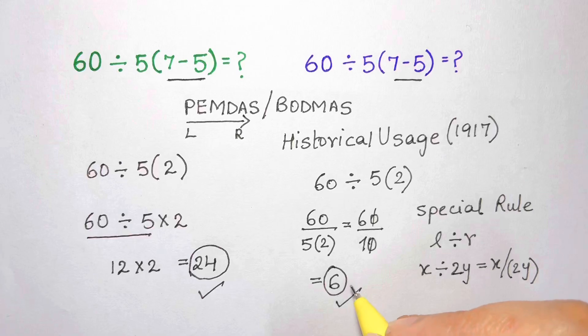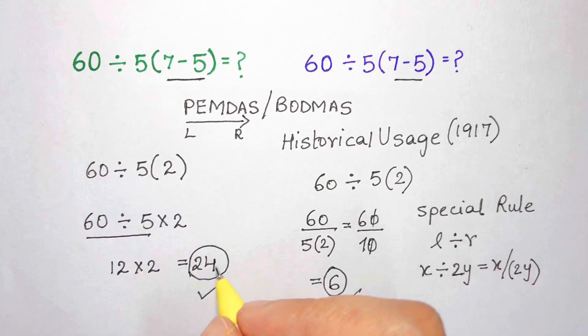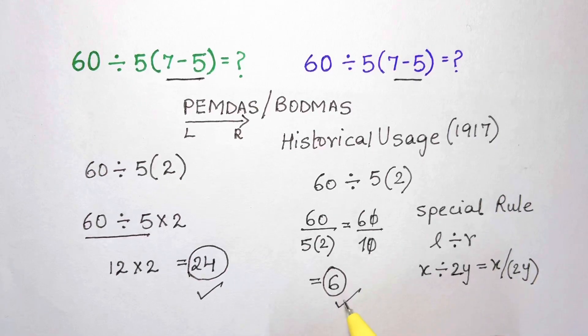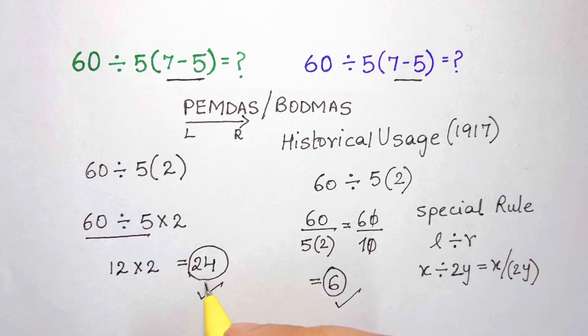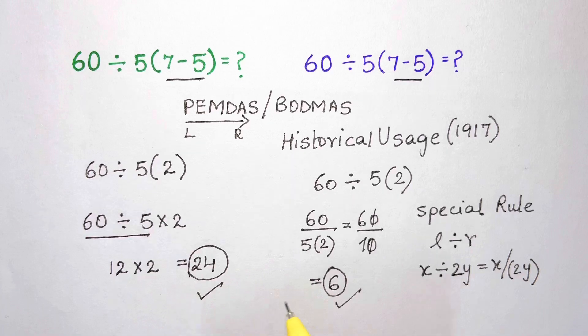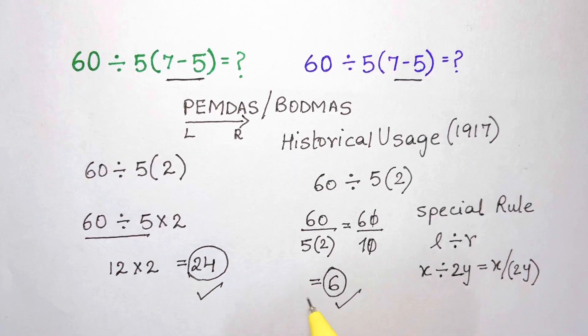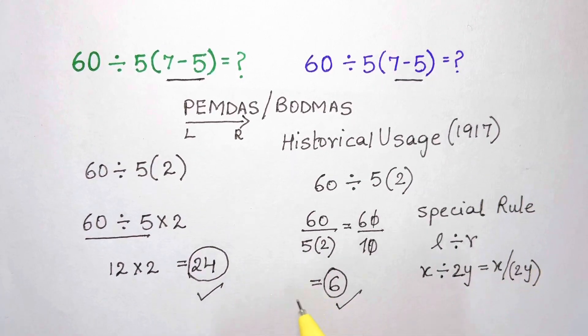This is one way that people do interpret this question. Some people say the answer is 6 and other people say it's 24. Some would argue the expression is ambiguously written, so there's no correction. It is analogous to a poorly written sentence.